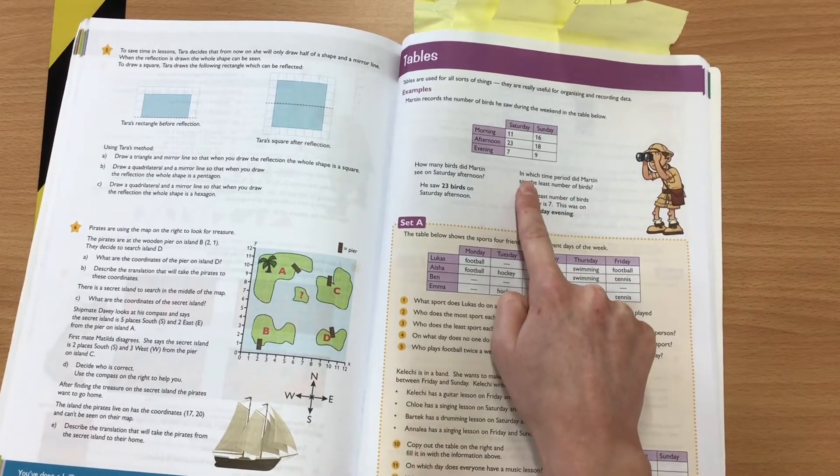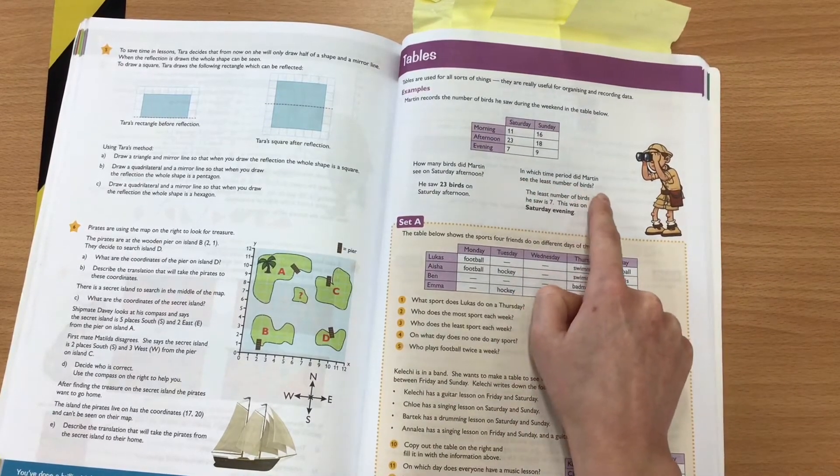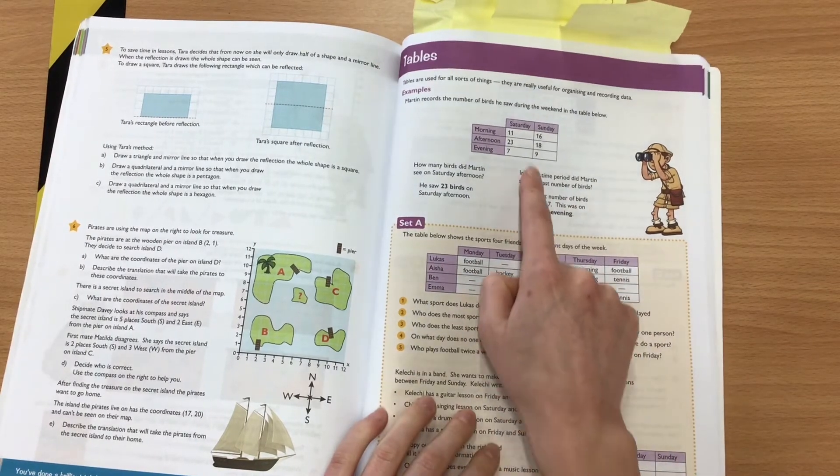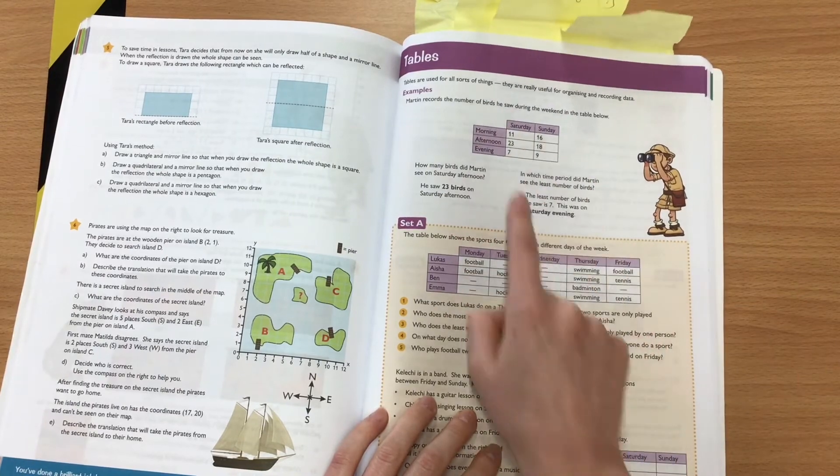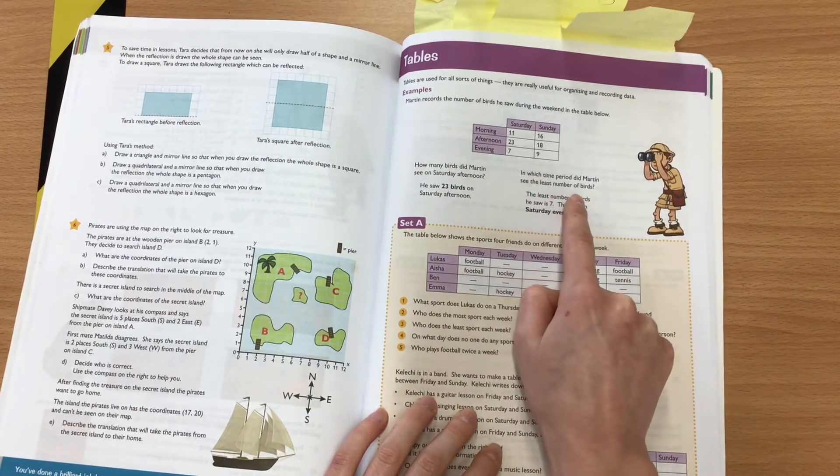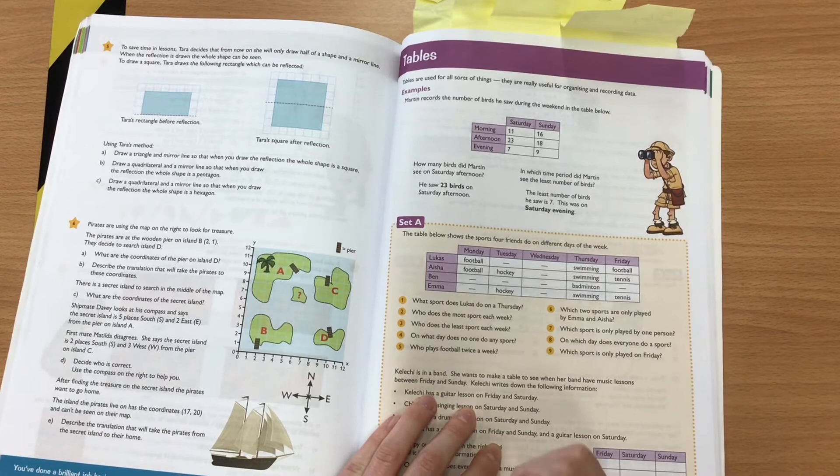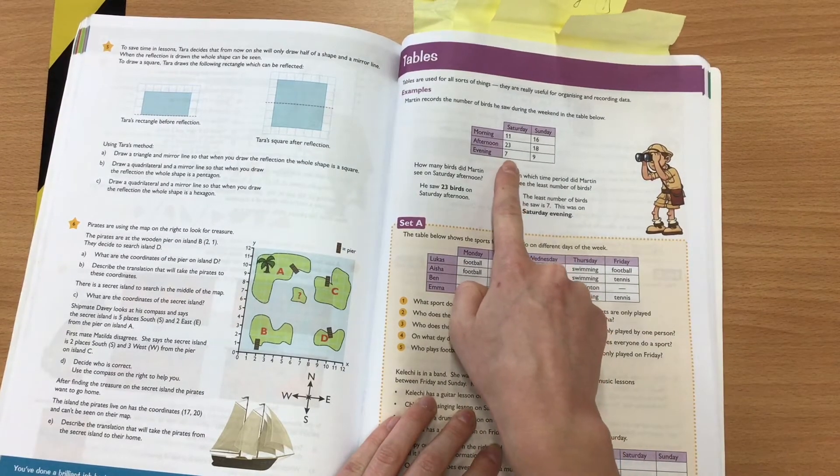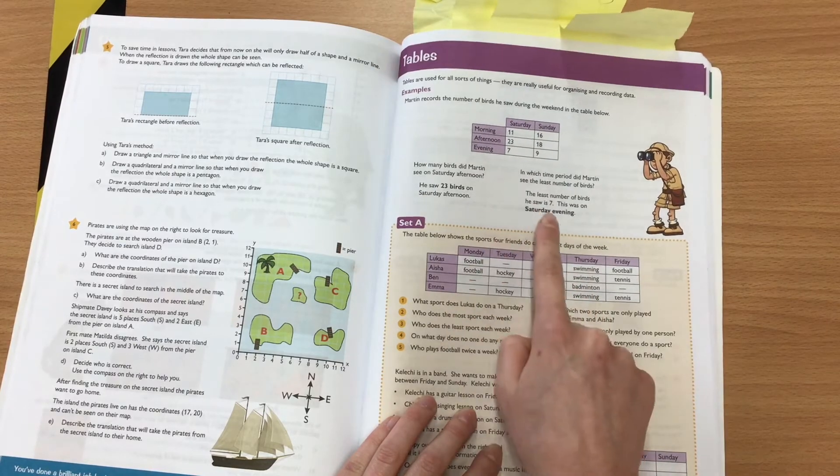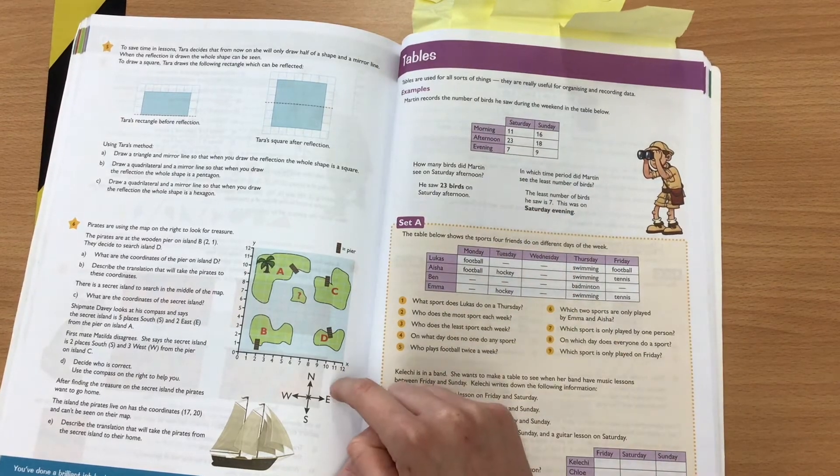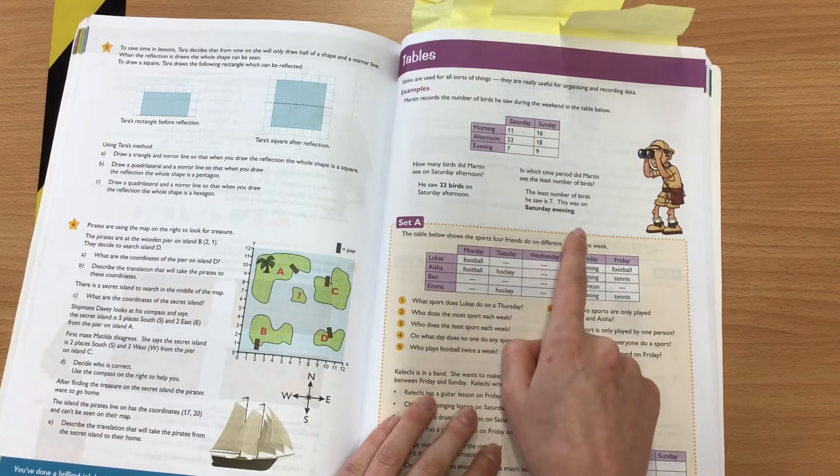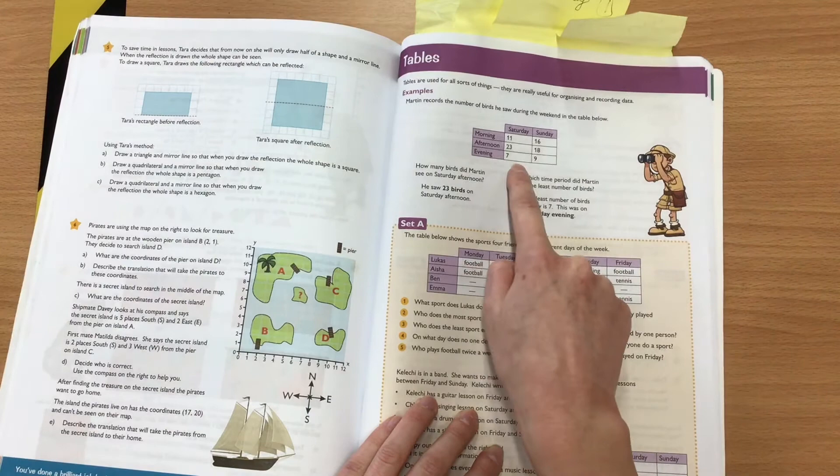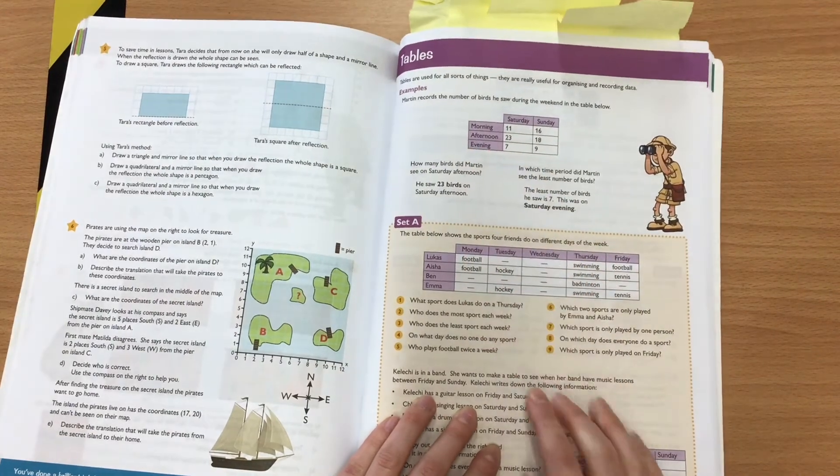And how about this one? In which time period did Martin see the least number of birds? So if we look at our whole table, it's asking for the least number of birds. So the least is our lowest number. And if we have a look, seven would be our lowest number. So the least number of birds he saw is seven, and this was on Saturday evening.